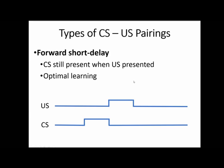The first is the forward short delay pairing. A forward short delay pairing means the conditioned stimulus is going to still be present when the unconditioned stimulus is presented. At the bottom of each of these graphics, time runs along the bottom axis, and when a line is up, that stimulus is happening. Moving along in time, there's nothing happening, and then the conditioned stimulus starts — for example, ringing a bell at a dog.